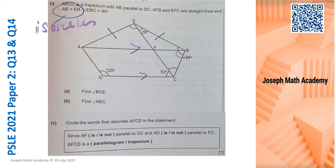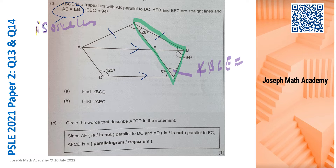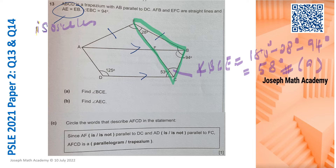First and foremost, we are supposed to find angle BCE. Angle BCE is easily found because it's within this particular triangle, which I'm going to outline in green. To find this angle is very easy because we already have the two angles in that triangle. So we can use the property — sum of angles in a triangle is 180 degrees. Meaning angle BCE is 180 degrees subtract 28 degrees subtract 94 degrees, and that gives us 58 degrees. So this is the answer for part A, one mark.